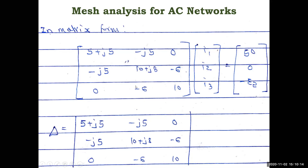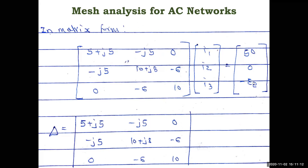The impedance matrix is: row 1 = [5+j5, −j5, 0]; row 2 = [−j5, 10+j8, −6]; row 3 = [0, −6, 10]. The source column is [50, 0, −E2]. This is the matrix form for Cramer's rule. Delta is the determinant of the impedance matrix. Since the problem asks to find E2 given I2 = 0, we focus on delta2 divided by delta equals zero, which means delta2 = 0 — so we don't need to calculate delta separately.